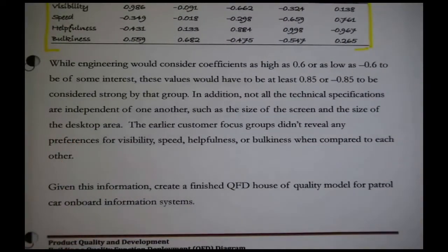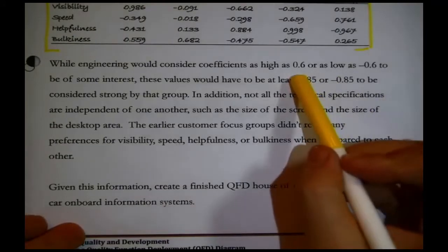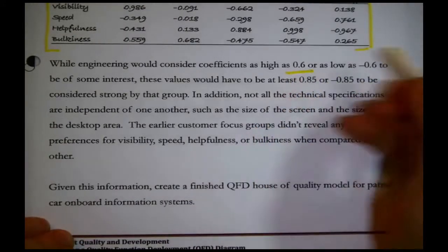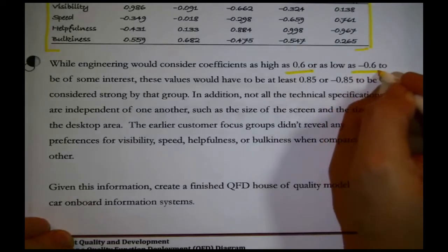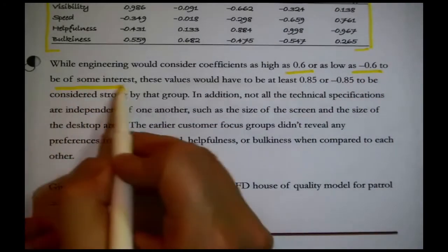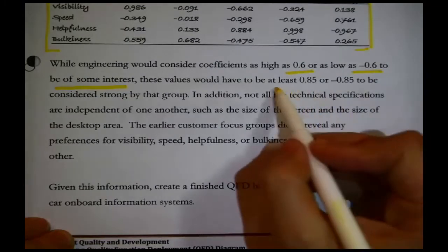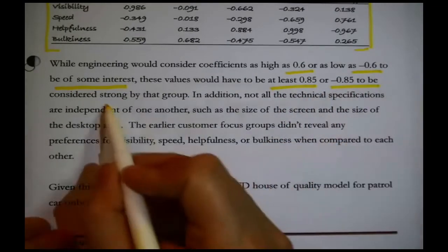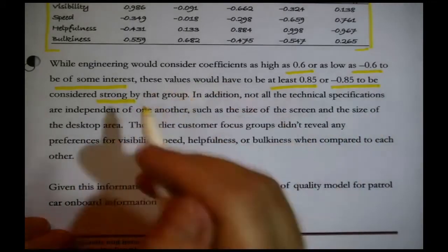While engineering would consider coefficients as high as 0.6 or as low as negative 0.6 to be of some interest, the values would have to be at least 0.85 or negative 0.85 to be considered strong by that group.